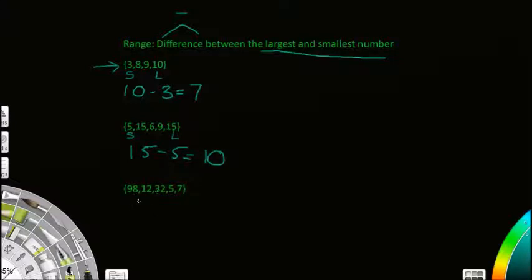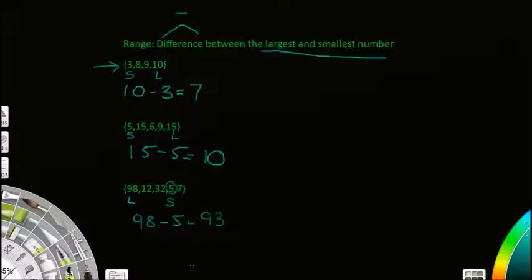Remember, the numbers aren't always going to be in numerical order, so pay attention — the smallest could be in the middle and the largest could be on one side. Here the largest is 98 and the smallest is 5; you might get tricked into thinking it's 7, but no, it's 5. So 98 minus 5 equals 93. Range is simple: just find the difference between the biggest and smallest number.